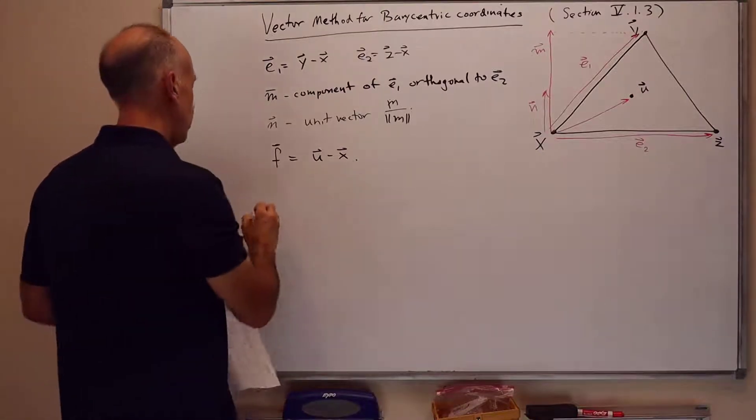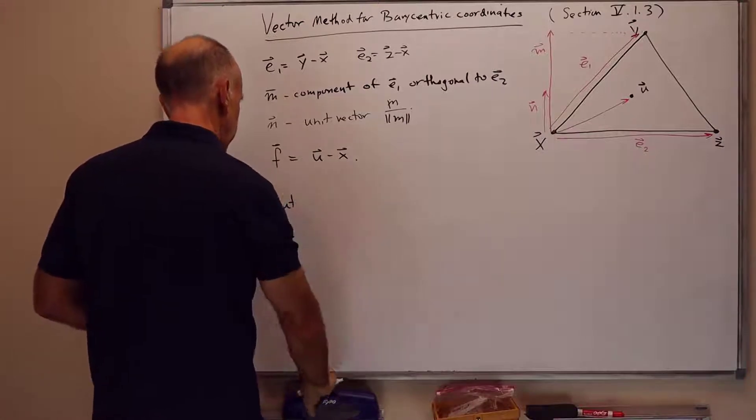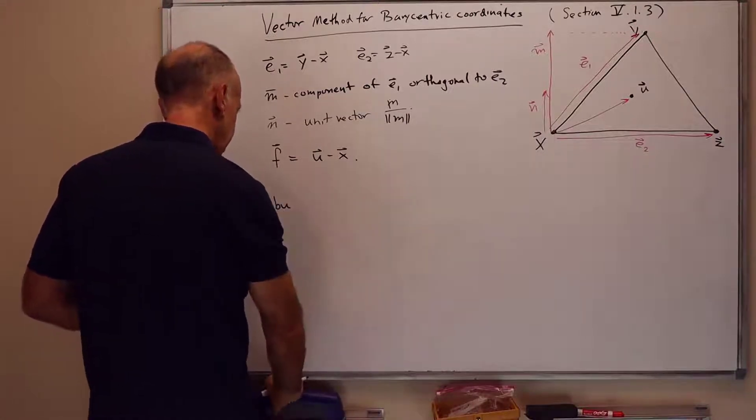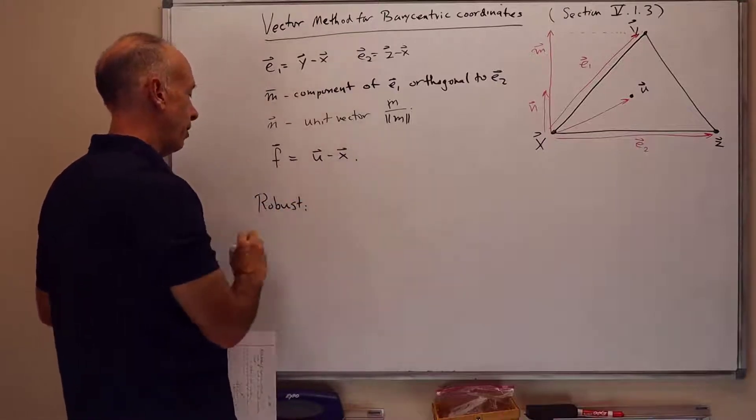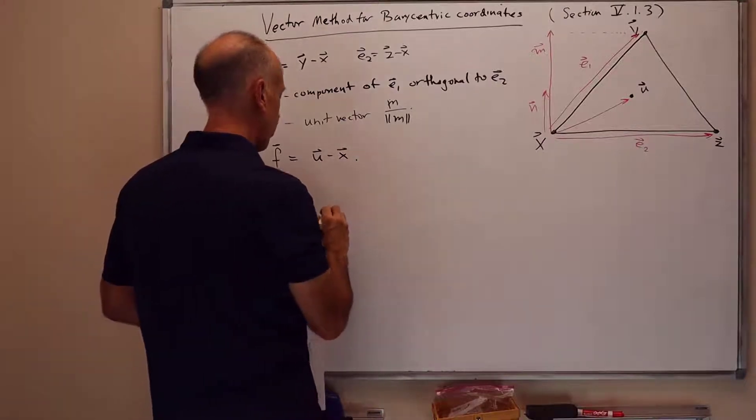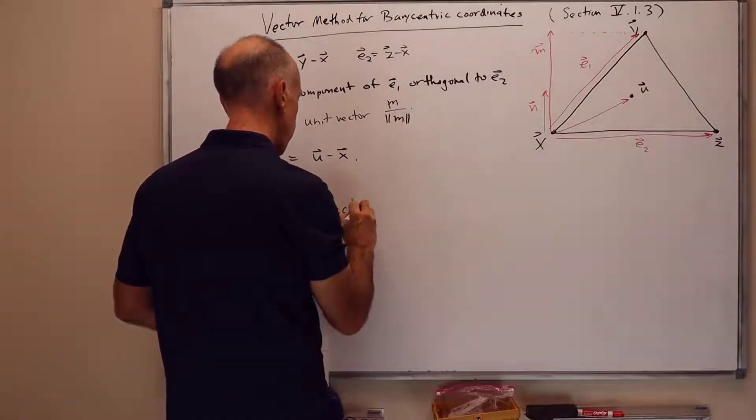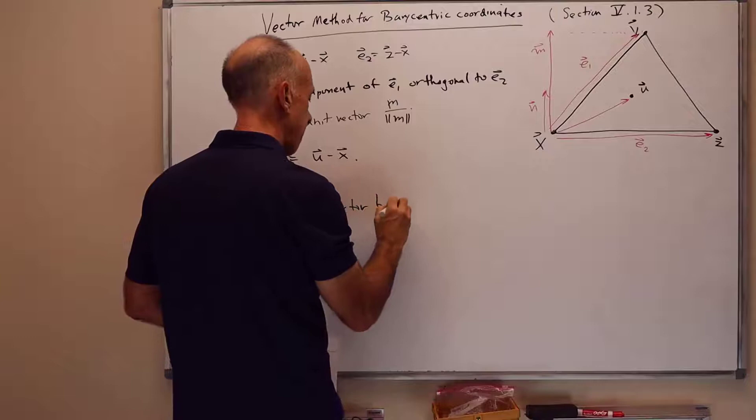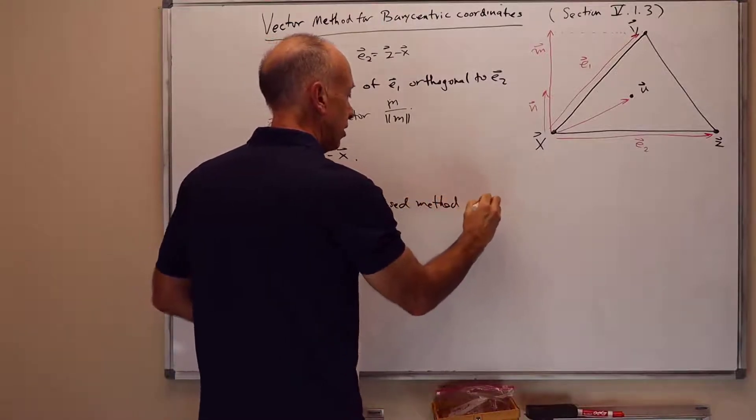So as I said the method is going to be robust. It will involve some pre-computations with a somewhat complicated looking formula, and then just a dot product with f. And in particular it will be robust in the sense of this vector based method gives the barycentric coordinates for u.